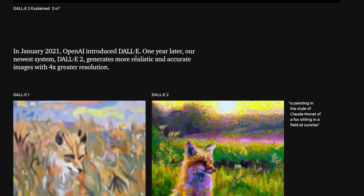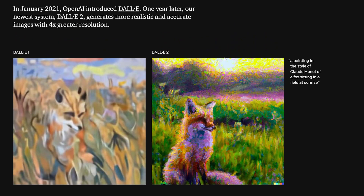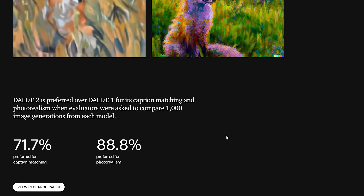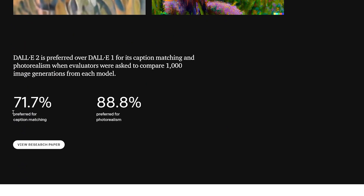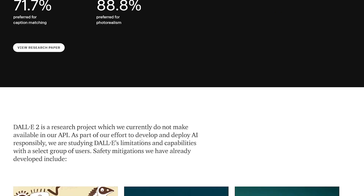In January, DALL-E one year later — this is showing the old version versus the new version. It's higher resolution, better details, more accurate and visually interesting. OpenAI is also working to make DALL-E 2 better aligned with users and what they want out of a system like this.